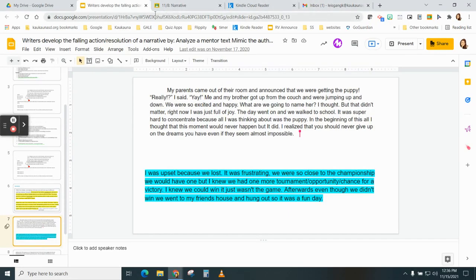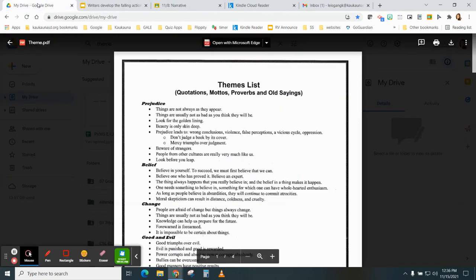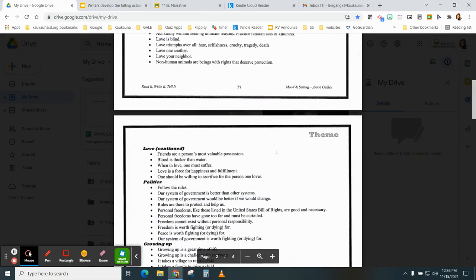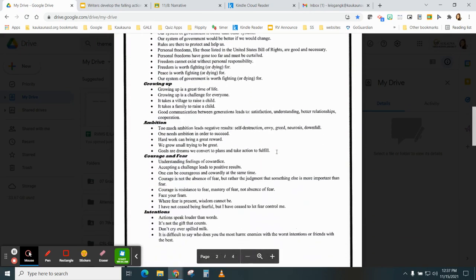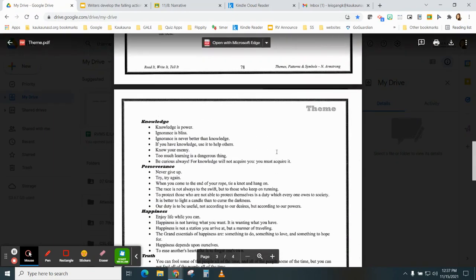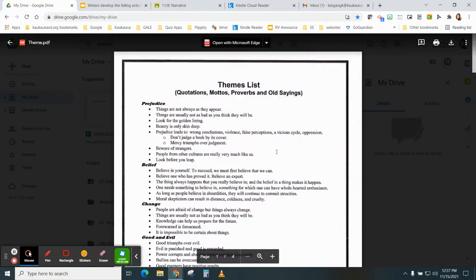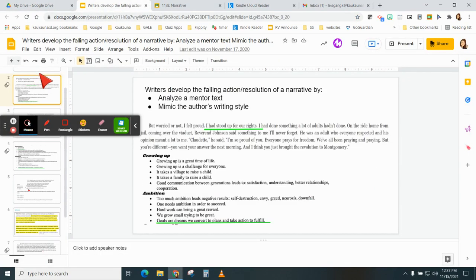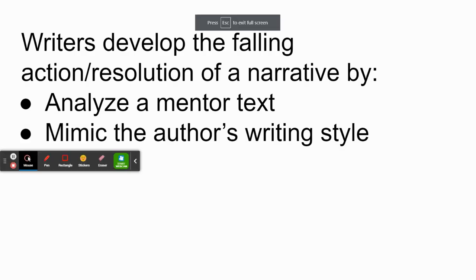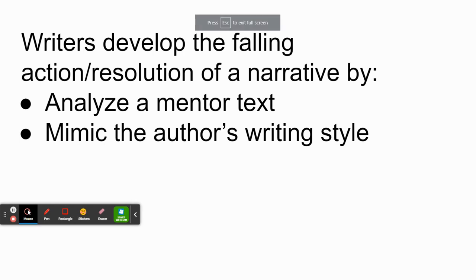These are just two seventh grade examples of how students worked on their resolution by weaving in a theme. The theme list is going to be posted in the Google Classroom post so that you can browse it and see which theme would best fit your narrative. What you can do right now is develop the falling action in your own narrative by analyzing the mentor text I shared and then work on mimicking the author's writing style.